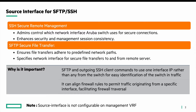By having a source interface for SFTP or SSH, this can be used to show that traffic originates from one interface IP rather than any interface on the switch, for easy identification. One important thing to note is that the source interface is not configurable on management VRFs — it can be done only on user-created VRFs.